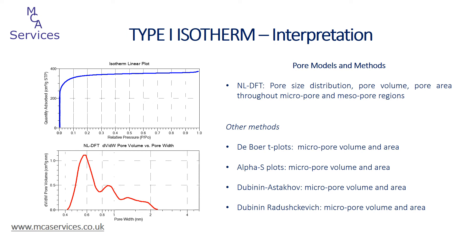Historically, instrumentation was not capable of acquiring usable isotherm data in the micropore region, and as a result we have some older models that can be used to generate micropore volume data — such as the De Boer t-plot, the alpha s-plot, the Dubinin-Astakhov, and the Dubinin-Radushkevich methods. These calculate micropore volume using isotherm data outside of the micropore range. The methods remain very useful today and are still quite important when comparing older literature.